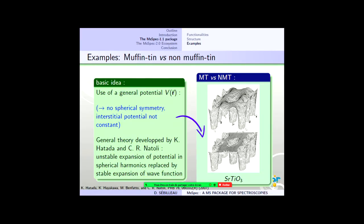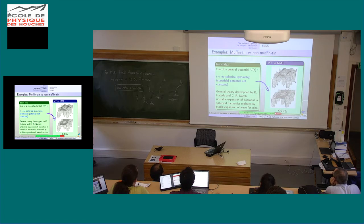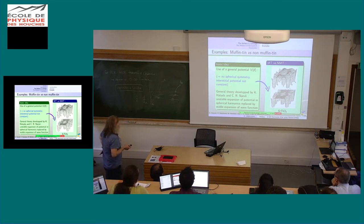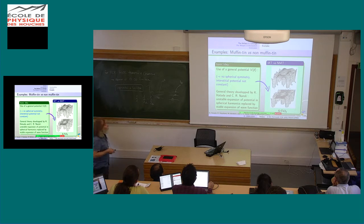Now muffin-tin versus non-muffin-tin. This was shown by Hubert, I guess by Jan, and by Keiske — it's a comparison made using Wien2k by Peter Blaha. It's a very well-known figure but nobody knew who was at the origin of it. When we published the blue book, we had to find out exactly where the figure was coming from. I wrote to Karl Schwarz, the first developer of Wien2k, and he told me it was Peter Blaha who did it, but it was not easy to track down the origin.